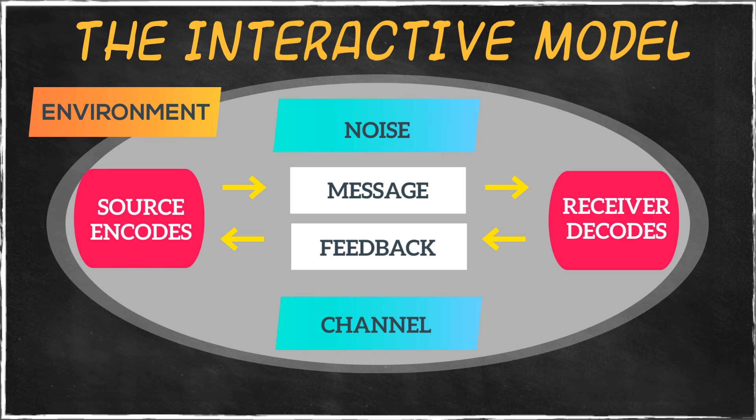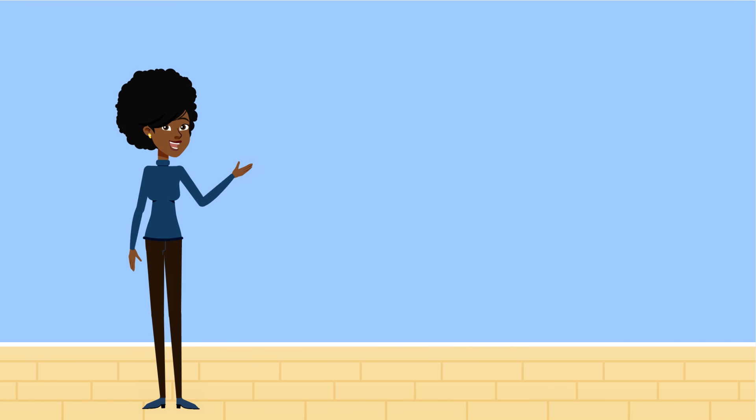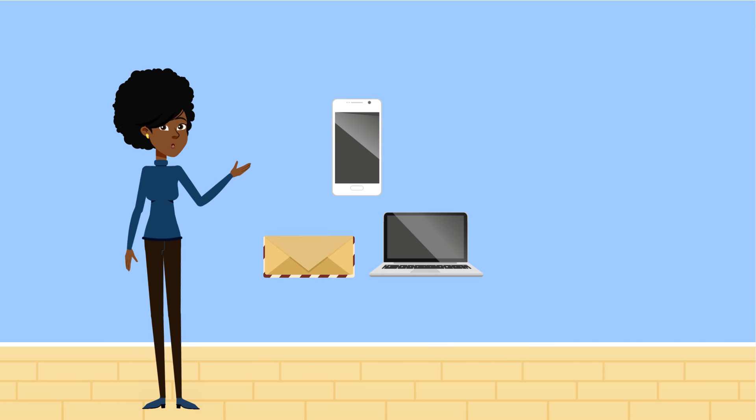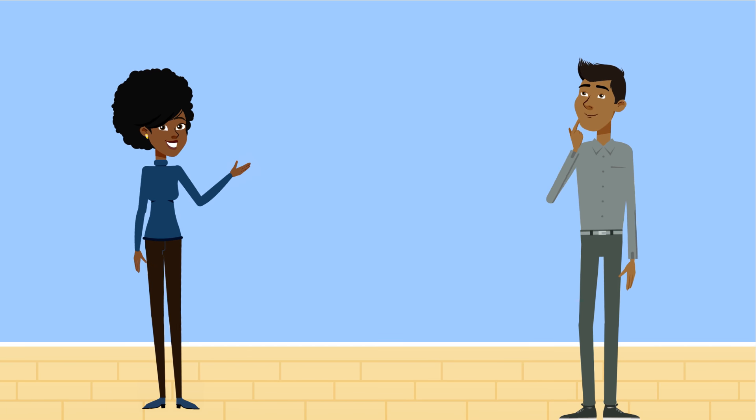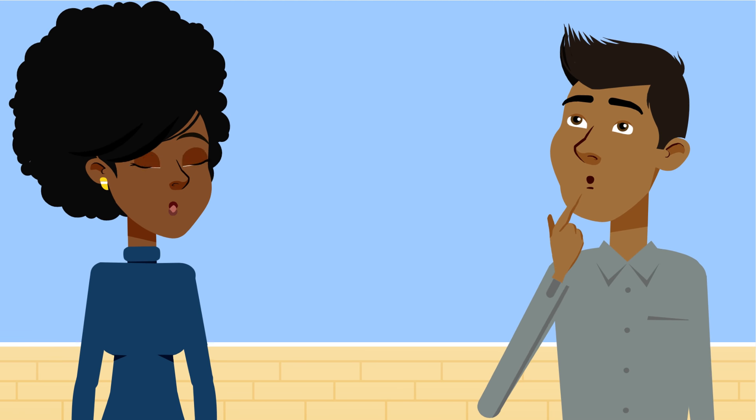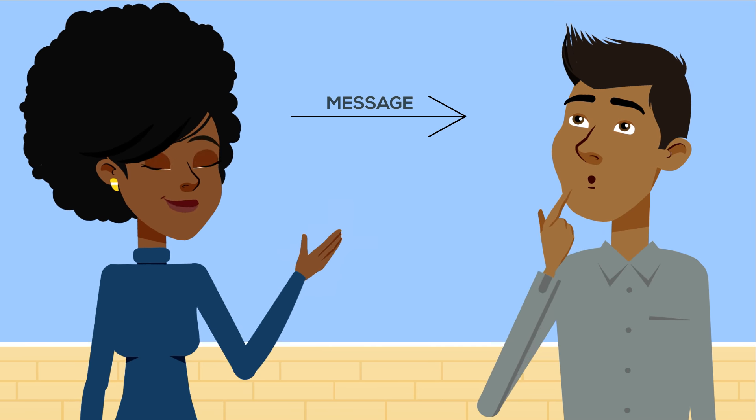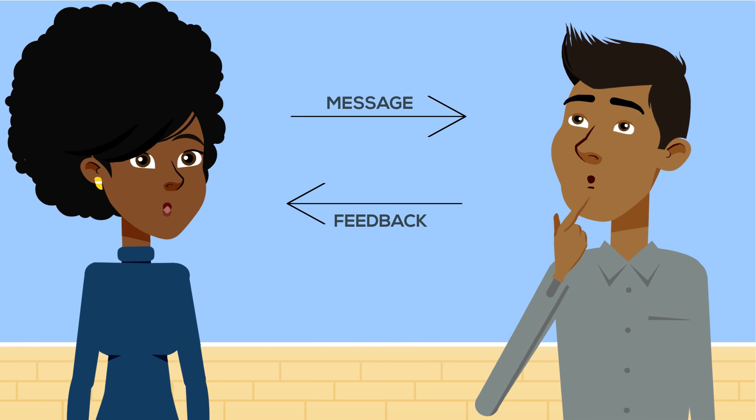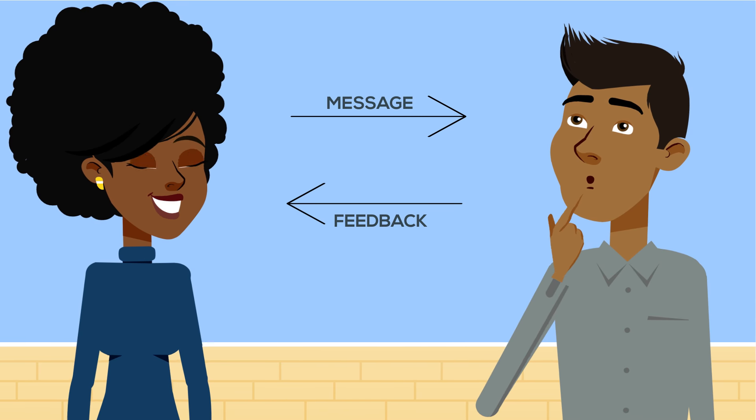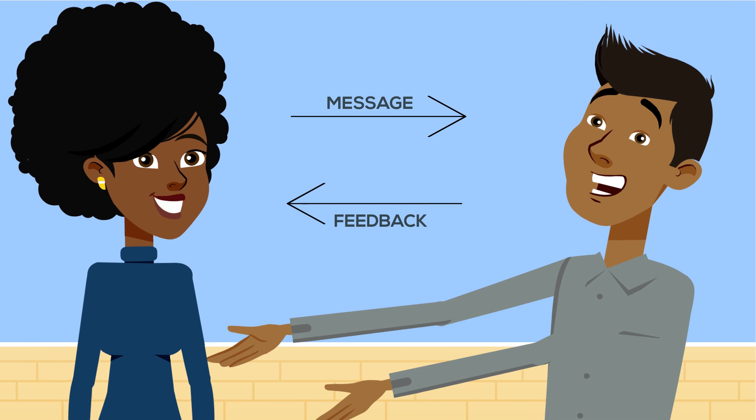Just like the linear model, the interactive model states that during communication, there is a source encoding a message, sending it through a channel, and a receiver that decodes the information. However, it also states, as the receiver is being sent a message, the receiver is also sending feedback to the source through their verbal and non-verbal responses to the message.